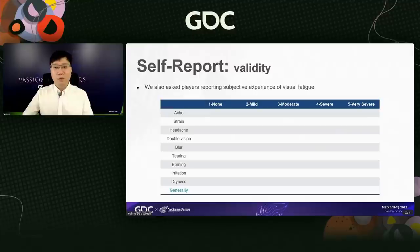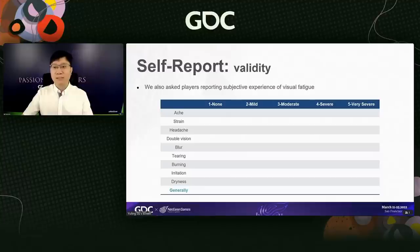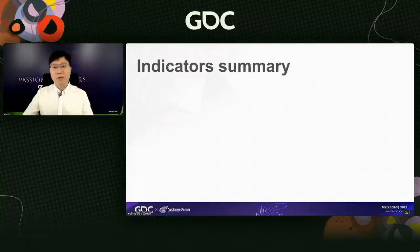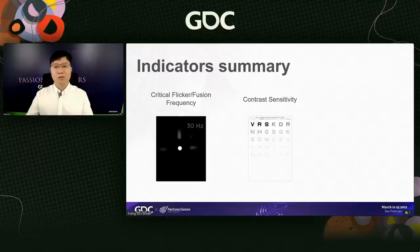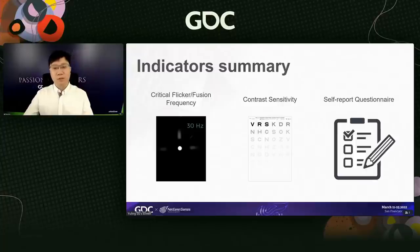Besides psychophysiological methods, we also ask subjects to self-report on a scale of one to five, measuring various symptoms of visual fatigue and checking whether the CFF and contrast sensitivity indicators are valid. In summary, we have three indicators of eye strain in this study: CFF, which measures temporal sensitivity and decreases when one is tired; contrast sensitivity, whose threshold increases when tired; and self-report, which is straightforward.